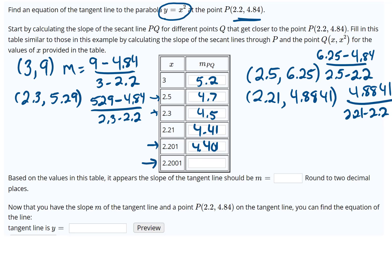And then finally we do it for the next one. We're moving closer and closer to 2.2, so we go ahead and square that and take that y minus the y from the given point over 2.2001 minus 2.2. It looks like for that one we get 4.4001.